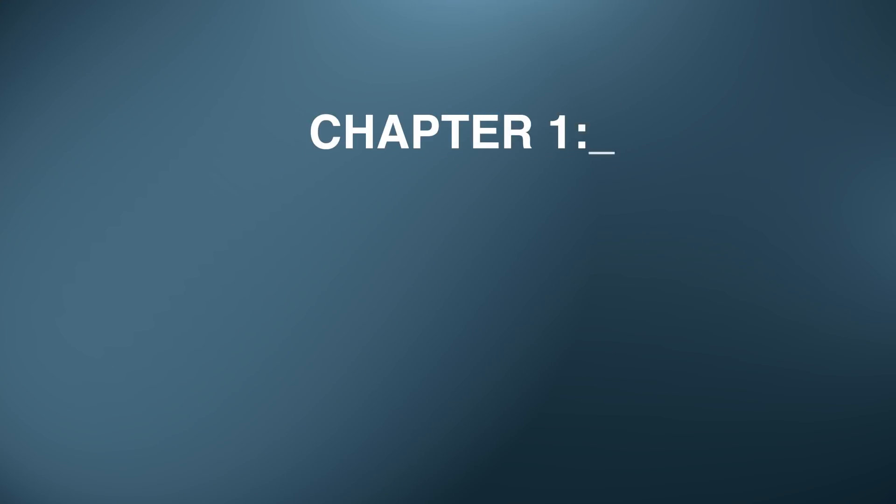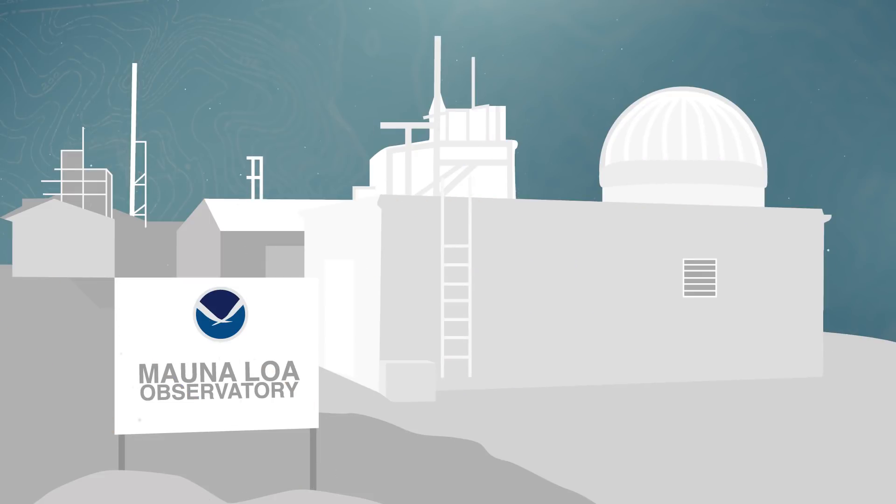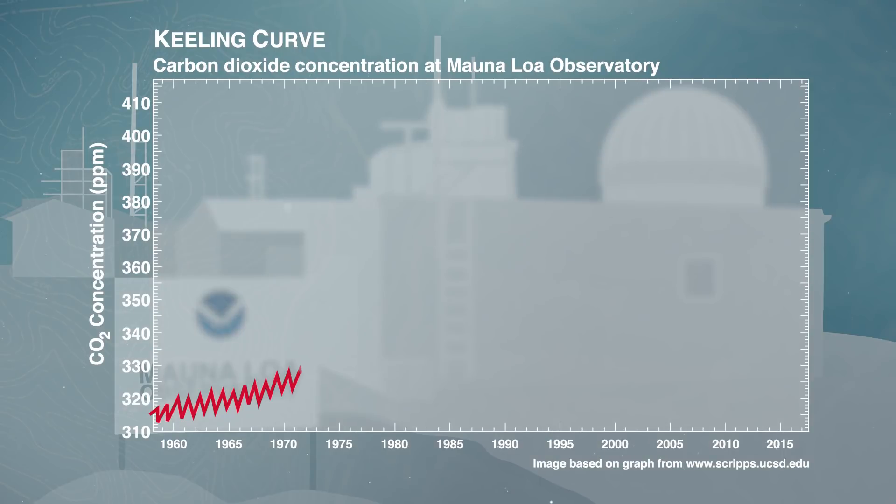Chapter 1. Carbon Dioxide. Since 1958, the Mauna Loa Observatory in Hawaii has been recording atmospheric levels of carbon dioxide. This graph shows the measurements started by Dr. Charles David Keeling, hence the name Keeling Curve.